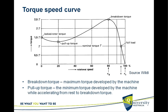Then the torque starts increasing, and at about 80% of the synchronous speed — not the nominal speed — the torque reaches a maximum called the breakdown torque, and then it starts dropping again.